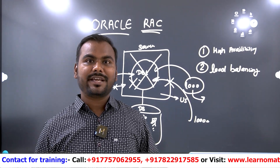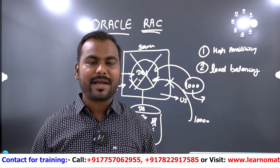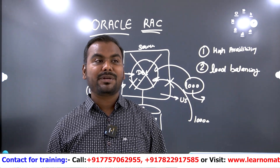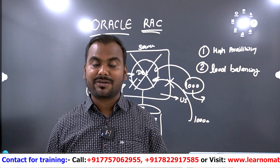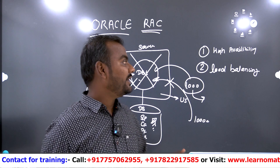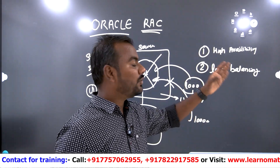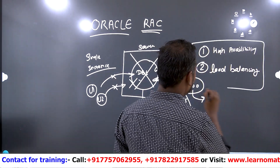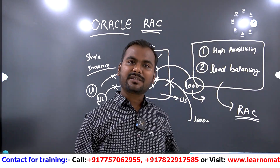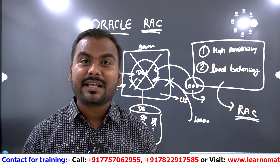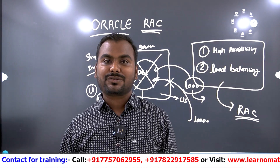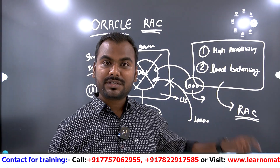If you are using a banking system like SBI — State Bank of India, a government bank — and it is down all the time, do you think you will use SBI? No. People will go to private banking systems like HDFC, ICICI, or many other banks which are providing very good services. So nowadays, people are saying we need high availability and we need load balancing. And these two things can be achieved by Oracle RAC — Real Application Cluster — which is a product of Oracle. By using Oracle RAC setup, you can get high availability and load balancing, and that is the reason people are using Oracle RAC.